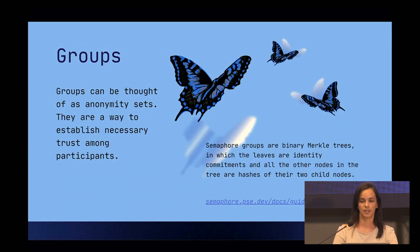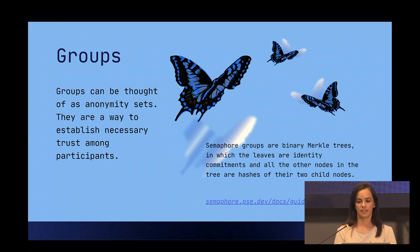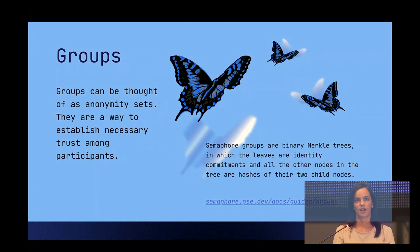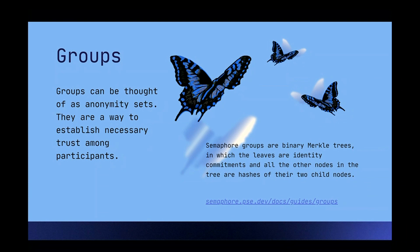Here we have groups. Groups are like sets, and they are binary Merkle trees where the leaves are the identity commitments and the other nodes are the hash of their two child nodes. Here is the link to the documentation to learn more about it.